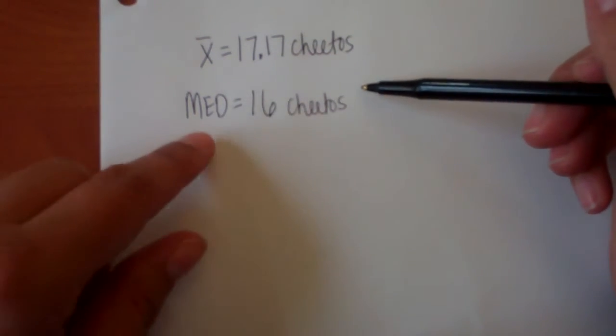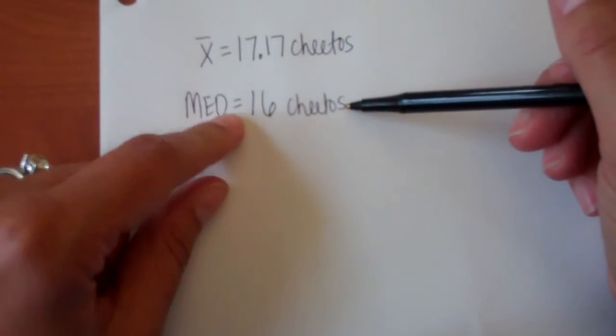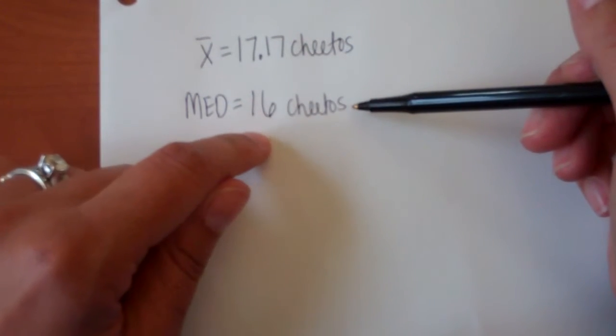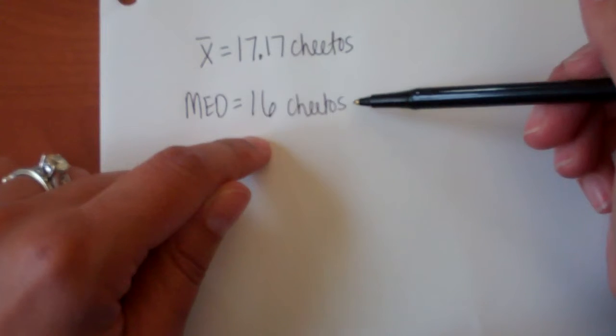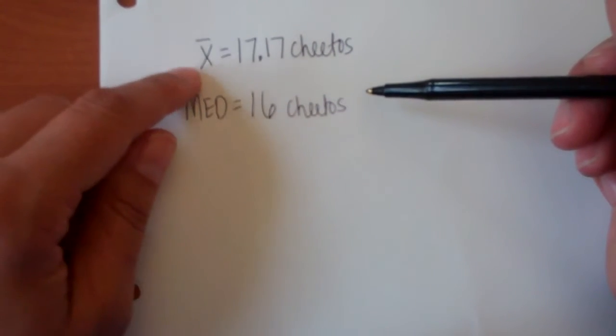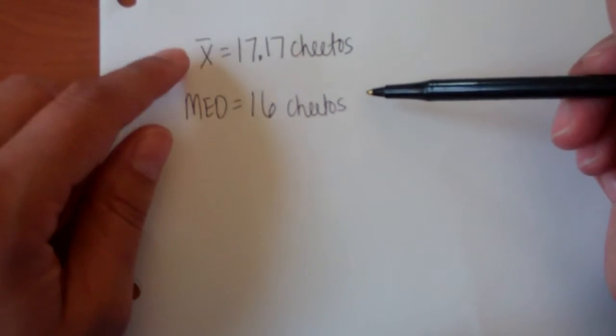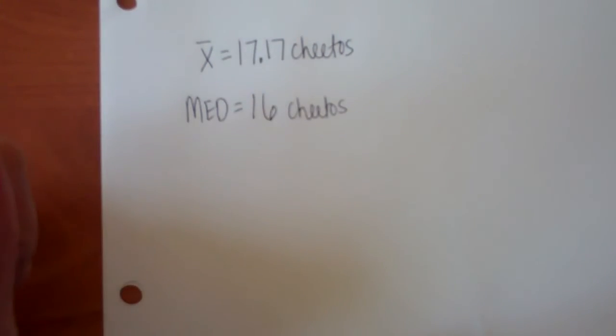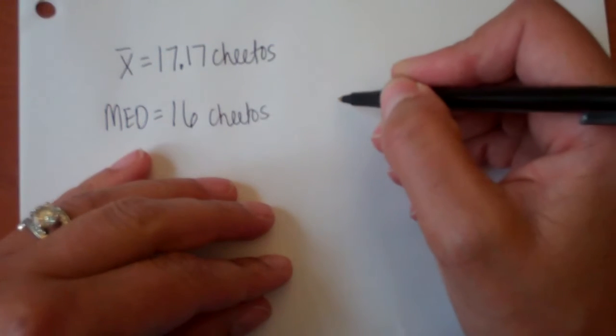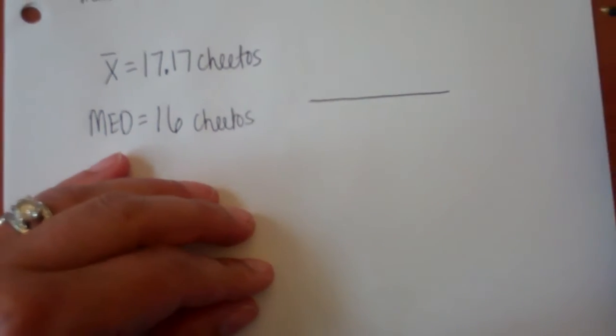So the middle number of Cheetos that we'll get in the bag is 16. That's right in the middle of the data. The average amount that we would get if we added all of the Cheetos up in the bag and divided by how many bags we had was 17.17.